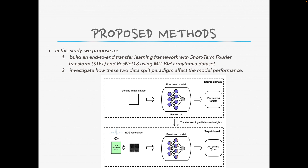In this study, we propose two parts of the work. The first part is to build an end-to-end transfer learning framework with short-term Fourier transform and ResNet-18. Because we use a transfer learning framework with a pre-trained model, we don't have to train the arrhythmia classifier from scratch with a large amount of data — we just need to fine-tune the classifier using the MIT-BIH arrhythmia dataset. The second part of the work is to investigate how those two data-split methods affect the model performance. We chose two existing models from the literature and compare their performance on intrapatient and interpatient evaluation. To ensure a fair comparison, we implement all the models ourselves following the architecture proposed in the literature.